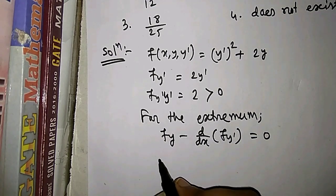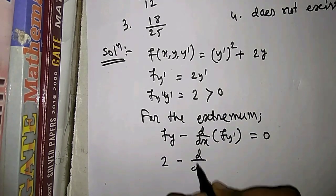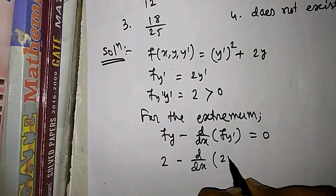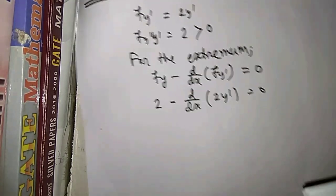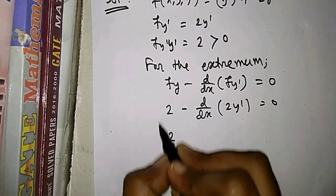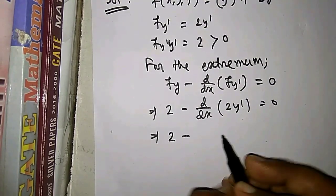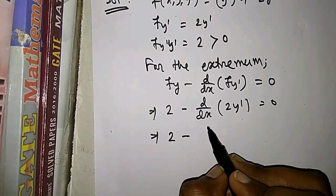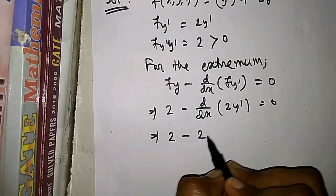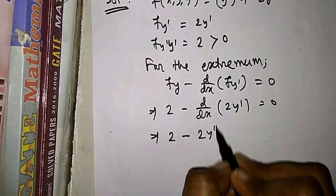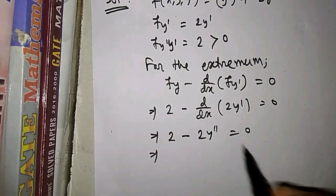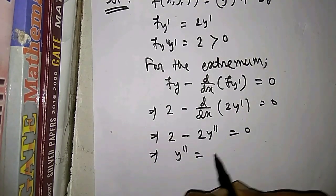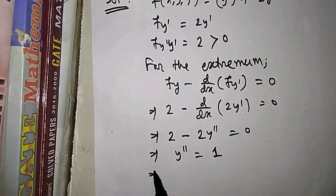So f_y is 2, and d/dx of f_{y'} equals d/dx of 2y' equals 2y''. The equation becomes 2 minus 2y'' equals 0, which implies we can cancel the 2, giving y'' equals 1.